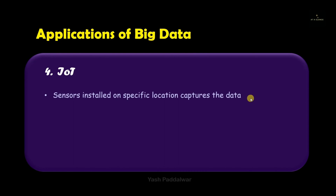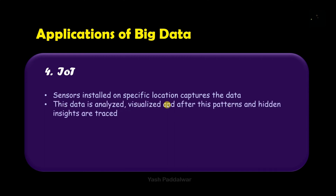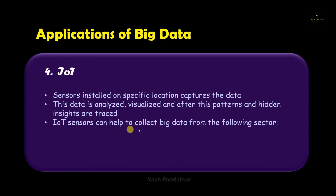The fourth application of big data is in IoT — Internet of Things. IoT basically captures real-time data through sensors. Sensors can be installed at a specific location to capture data. This captured data can then be analyzed and visualized, and hidden patterns inside that data can be traced.